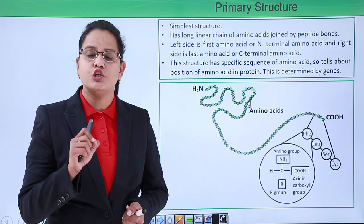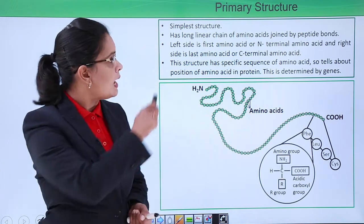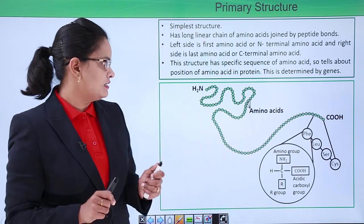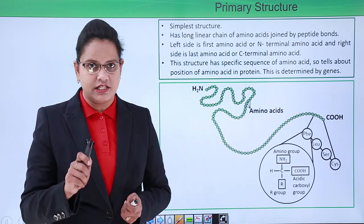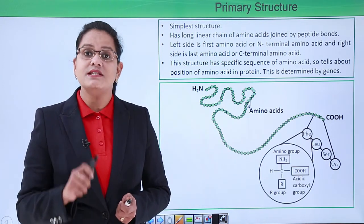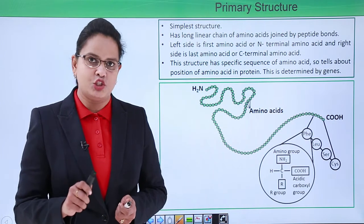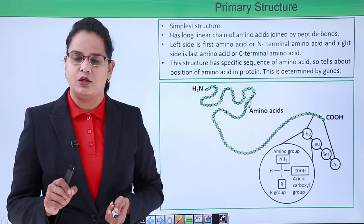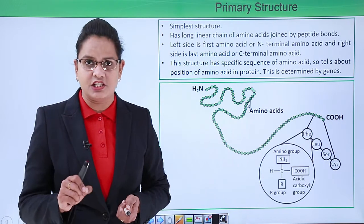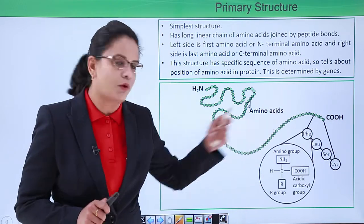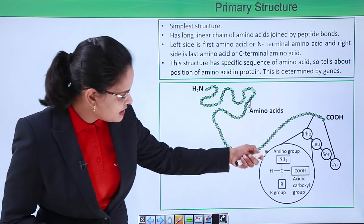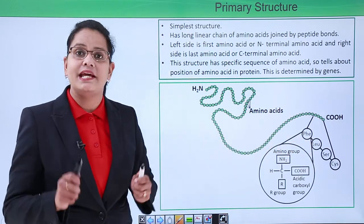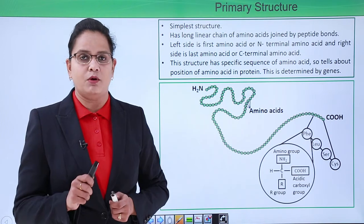These amino acids are joined in a linear chain by peptide bonds. The left-hand side is the first amino acid, known as the N-terminal of the peptide chain, and the right-hand side is the last amino acid, known as the C-terminal because of the presence of the carboxyl group. These individual amino acids are joined together by peptide bonds.